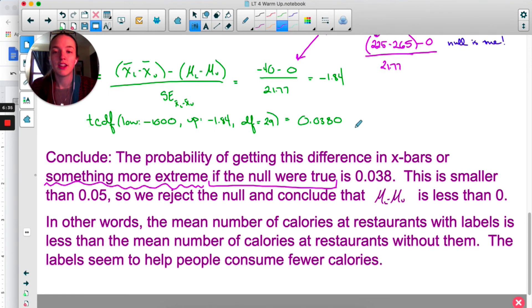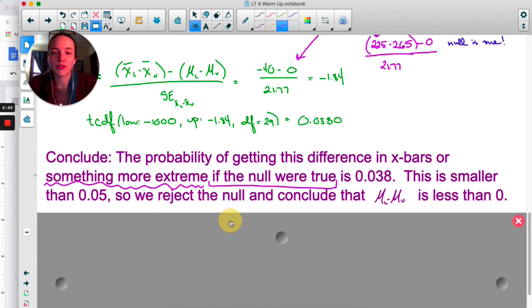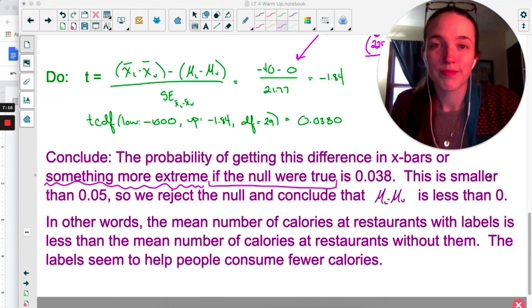Okay, now so far I have not given any context. If I stopped there, this answer would not get full points, because who knows what I'm talking about? At no point have I mentioned the context of the problem. So I added a second part of my conclusion where I explain what that means. The mean number of calories at restaurants with labels is less than the mean number of calories at restaurants without them. And then one more concluding sentence: the labels seem to help people consume fewer calories. So I'm just taking it one step further and pointing out what that means in terms of the bigger problem.